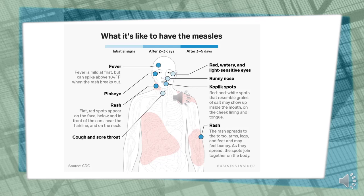After 2 or 3 days, thin red and white spots may show up in an infected person's cheek lining and on their tongue. These are called Koplik's spots, and they are a hallmark of measles.